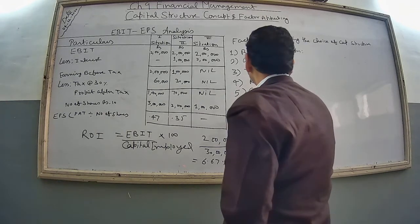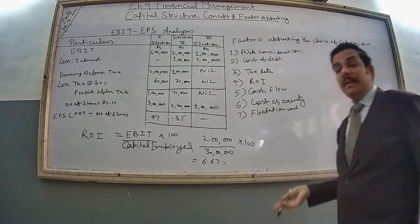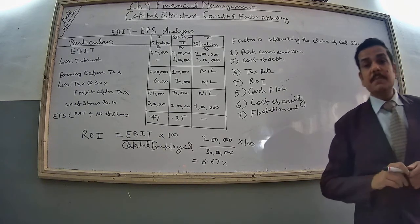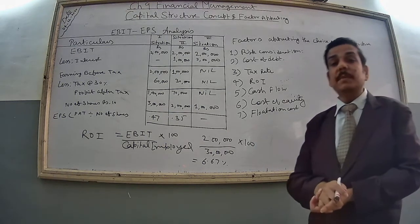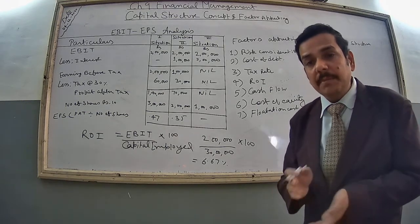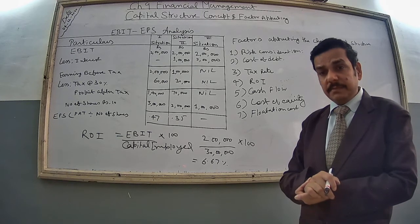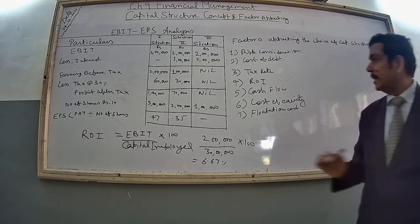Seventh factor is flotation cost. Every loan or fund-raising comes with some cost — cost of advertising, printing, brokerage, and other factors. This is called flotation cost. Higher the flotation cost, the less attractive the source. For example, in share capital, minimum subscription is 90%. If you are not able to achieve minimum 90% subscription, you have to return the money and your whole exercise becomes worthless, incurring very high flotation cost. So always keep this in mind.